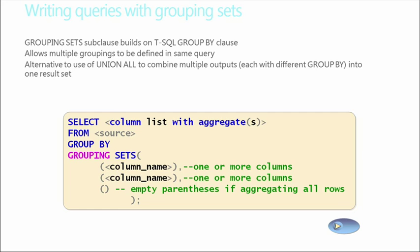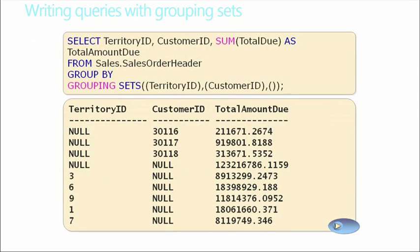Writing queries with grouping sets — a subclause that builds on the T-SQL group by clause — allows us to create multiple groupings. An alternative use is the union all, which was demonstrated earlier. Here's an example: we do a select territory ID and customer ID, aggregate function of sum as total amount due, from the sales order header table, group by with grouping sets. We have a grouping set of territory ID and customer ID. Down towards the bottom where we got some valid information, you see the territory IDs are grouped, and we'll have the total amount for each of the territories with customer IDs per customer.